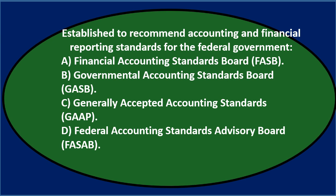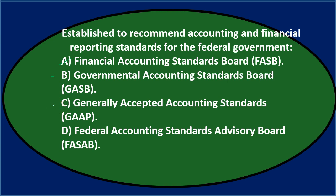Option A, the FASB, is recognized in for-profit accounting, so it's probably not the one we'd expect for a government context — eliminating that. Option C, GAAP, is a set of standards, not an entity, and applies mainly to for-profit — eliminating that. Option B, the GASB, sounds relevant, so we'll keep it. Option D, the Federal Accounting Standards Advisory Board, also says 'federal government,' so we'll keep that too. We're left with B and D.